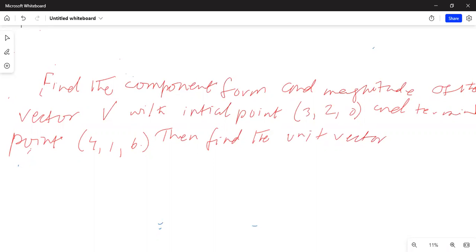Find the component form and magnitude of the vector v with initial point (3, 2, 0) and final point (4, 1, 6). Then find the unit vector. So first we will find the component form.